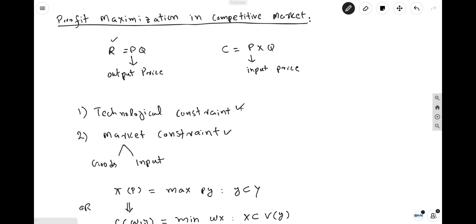By technological constraints, we mean that all the production plans in the production possibility set are not feasible — some are feasible and some are not. So, production will be done subject to those plans which are technologically feasible. Market constraints arise from buyers and sellers: only specific prices will be acceptable to buyers and only specific prices will be acceptable to sellers. The interaction of buyers and sellers determines the market price both in the goods market and in the input markets.